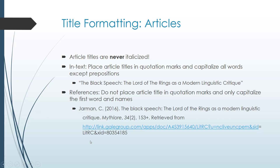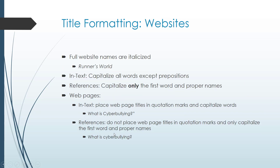Another thing specific to APA: along with the journal title, you also italicize the volume number but not the issue number. The issue number appears in parentheses and is not italicized, and page numbers are not italicized either. So italics go for the journal title and the volume number only.